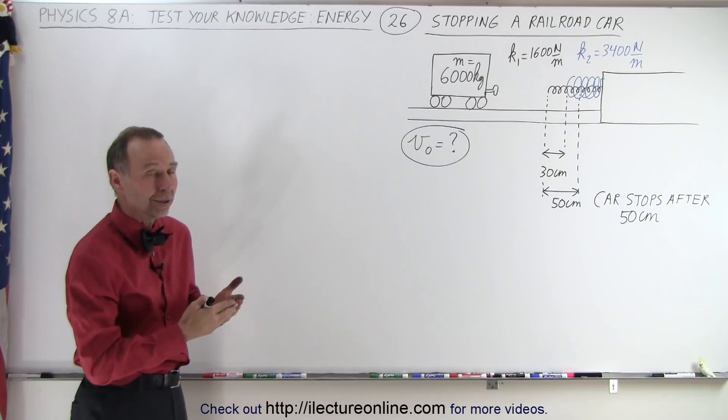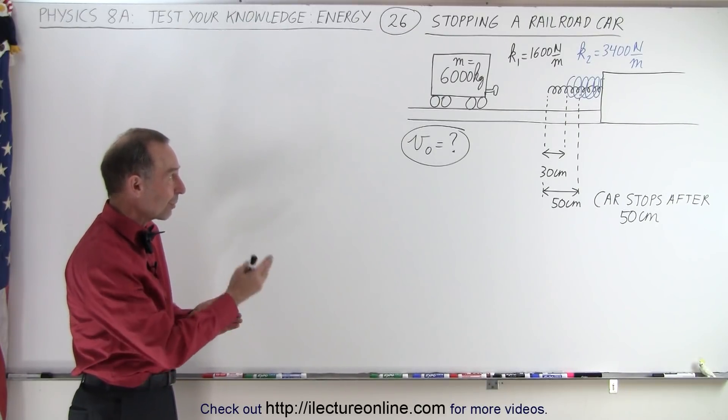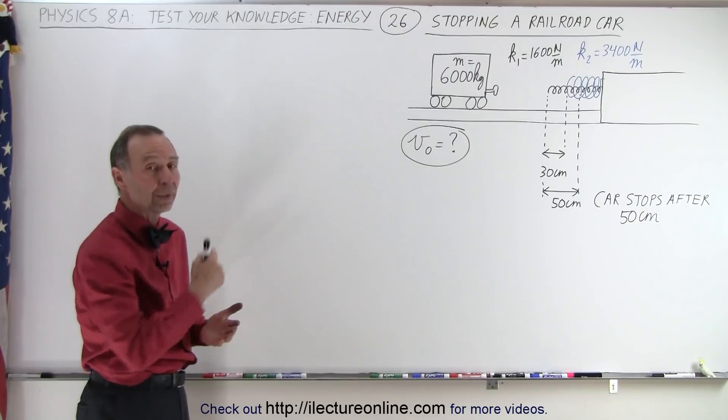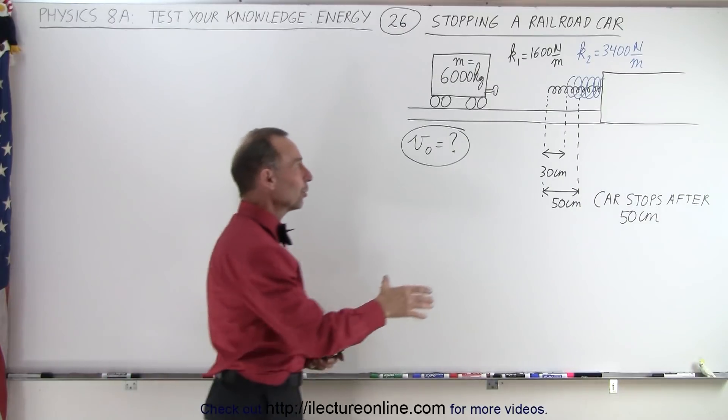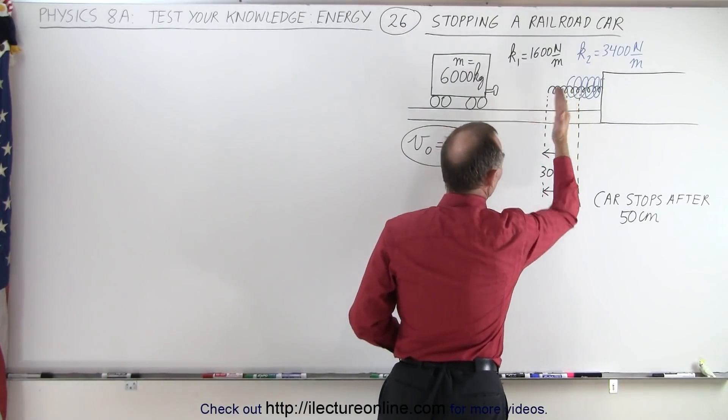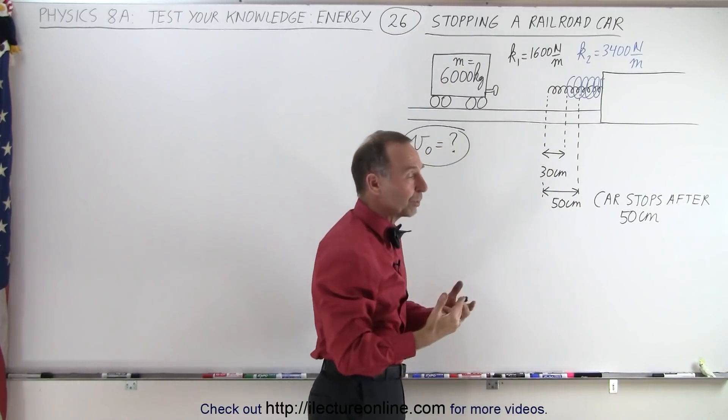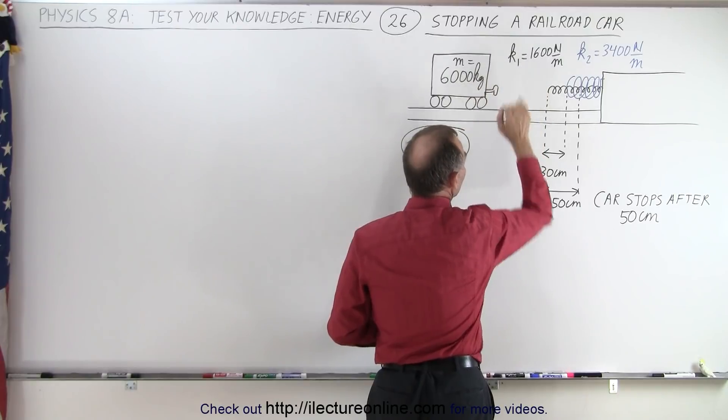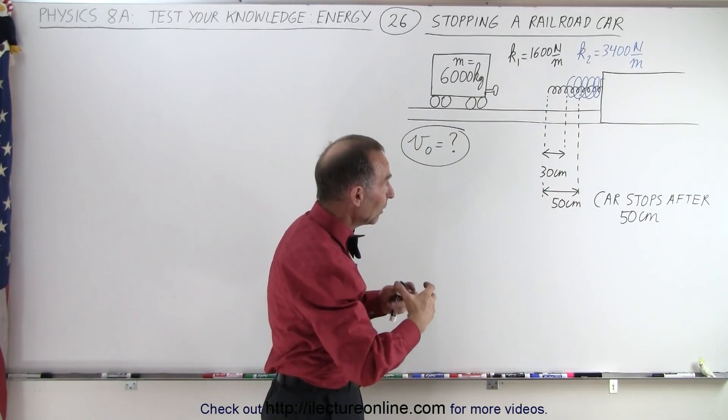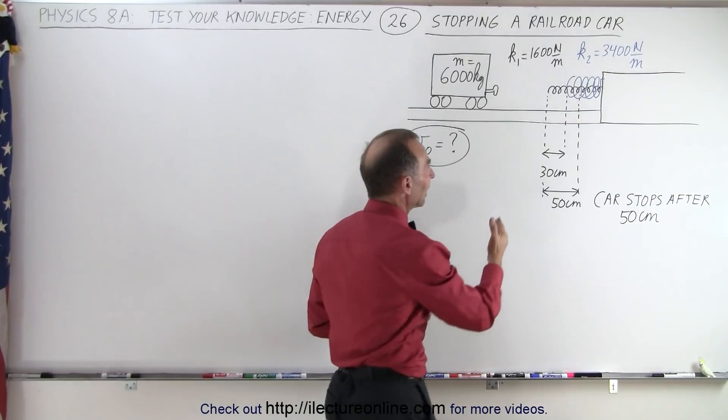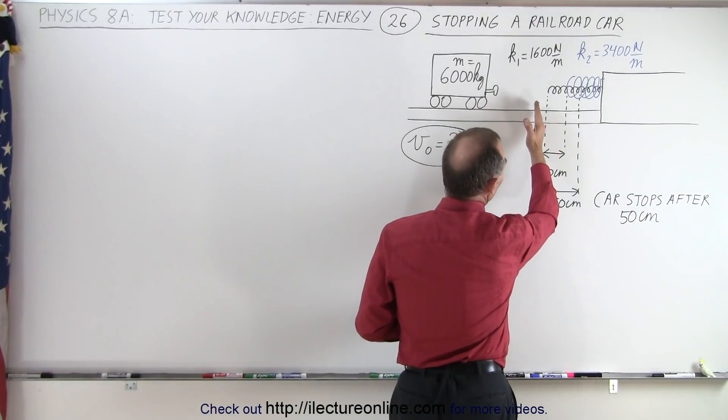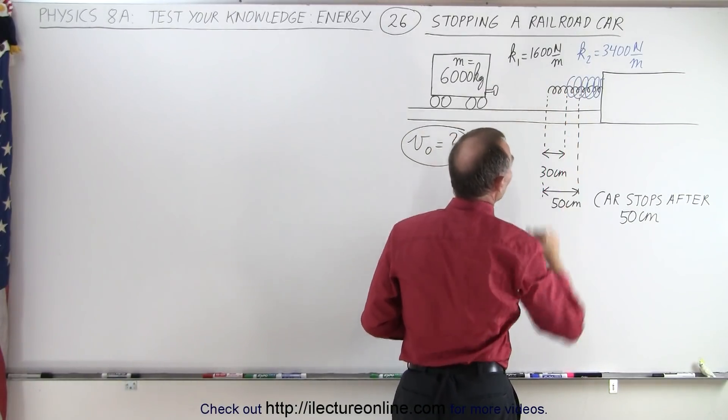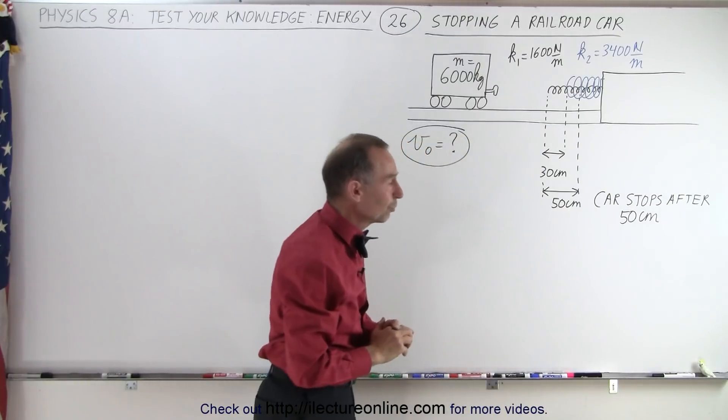Let's say we have a railroad car with a mass of 6,000 kilograms rolling down the track towards one of those safety mechanisms, a bumper system that consists of two springs. A smaller spring engaged first has a spring constant of 600 newtons per meter, and a stronger spring that engages after the car has gone an additional 30 centimeters with a spring constant of 3400 newtons per meter.